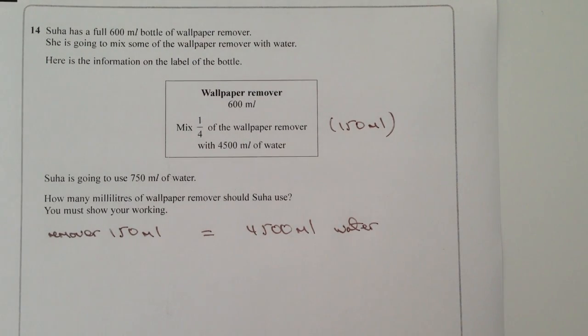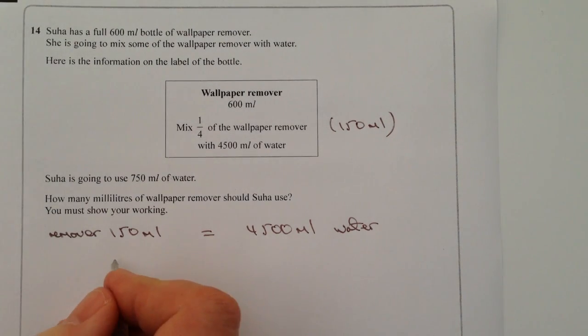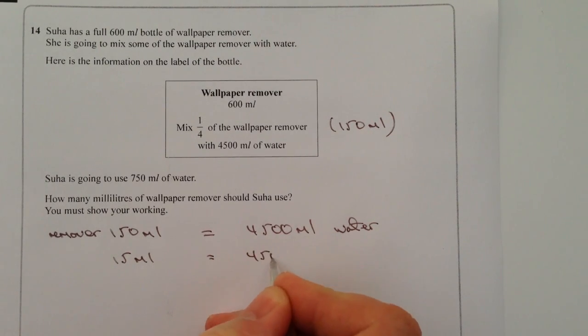And then really in order to answer the question, it's just a way of trying to work out how to make this column 750ml. So this is really all about ratio. So what I'm going to do is I'm going to divide both sides by 10 because if I do that it means that 15ml is going to equal 450ml of water.